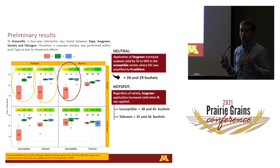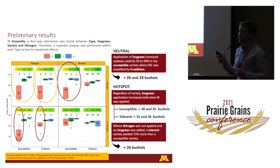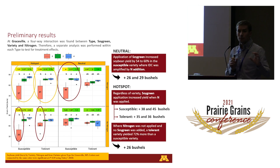Even in a neutral area where IDC is not as severe, if there is nitrogen carryover from the previous crop, the farmer could expect lower yields without applying soy green when planting a susceptible variety. At our hotspot, we found that regardless of variety, soy green application increased yield when nitrogen was applied. If there is nitrogen carryover, independent of whether it's a susceptible or tolerant variety, in a hotspot area the farmer can expect yield reductions without soy green.